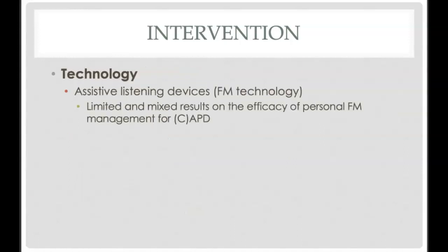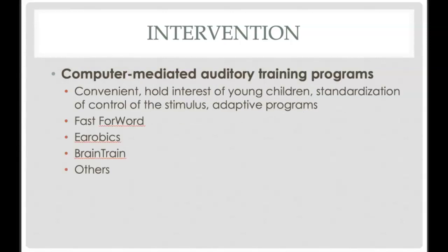FM systems are highly used technology for APD. There are also different computer-based auditory training programs. Fast ForWord was very controversial. Aerobics was relatively affordable — it involved games including memory tasks, and was fun for kids, even those who were borderline. Brain Train is another option. These computer programs are available tools, though effectiveness remains debated.